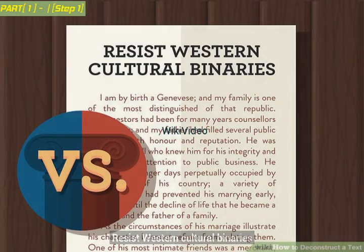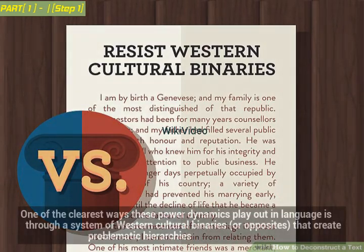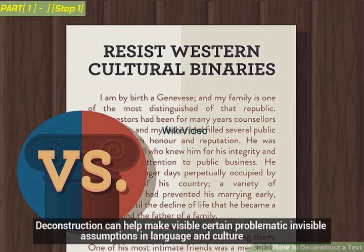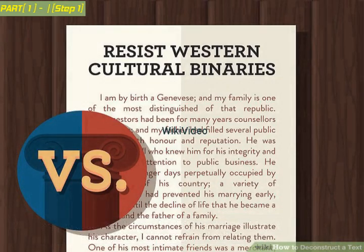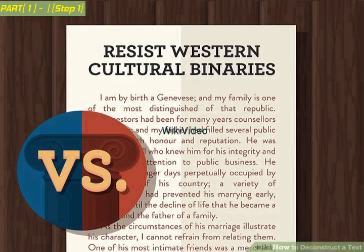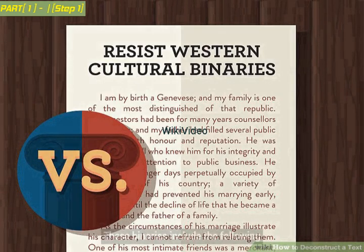Resist Western cultural binaries. Deconstruction argues that language contains political claims that disguise their own politics — in other words, that language is a mask for pernicious and arbitrary power structures. One of the clearest ways these power dynamics play out in language is through a system of Western cultural binaries or opposites that create problematic hierarchies. Deconstruction can help make visible certain problematic invisible assumptions in language and culture. Learn how to get beyond a simplistic system of binaries that culture creates and that language might try to uphold. Try to see where there are shades of gray, where seeming opposites are actually very closely related, or where one side of the binary system might in fact be inferior.